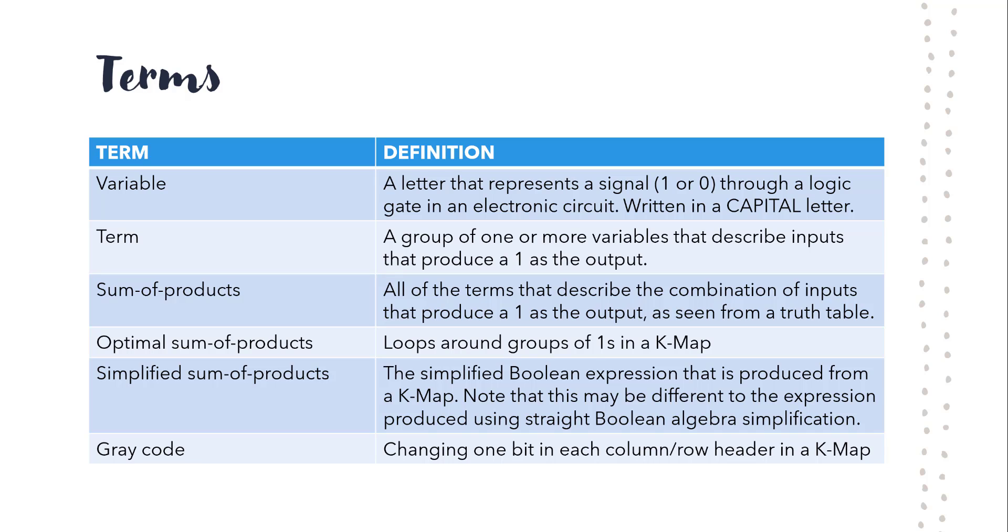So a few terms. A variable is any of the letters. They're arbitrary, doesn't really matter what they are. They're normally written in capitals, A, B, C, etc. A term is a group of these variables. And a term is, think of it like the combination of inputs for one row in a truth table that produces a 1 as the output.